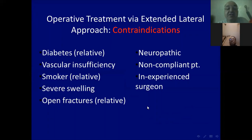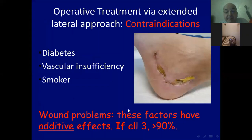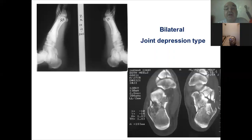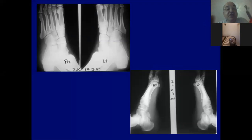The extensile lateral approach is contraindicated in diabetics, vascular insufficiency, smokers, severe swelling, open fractures, neuropathic patients, non-compliant patients, and inexperienced surgeons — because the risk of skin flap sloughing is up to 90% in diabetic, vascular-insufficient, smoking patients. This is demonstrated with a case of bilateral joint depression type calcaneus fractures from a fall from height in a young, healthy, non-smoking patient.